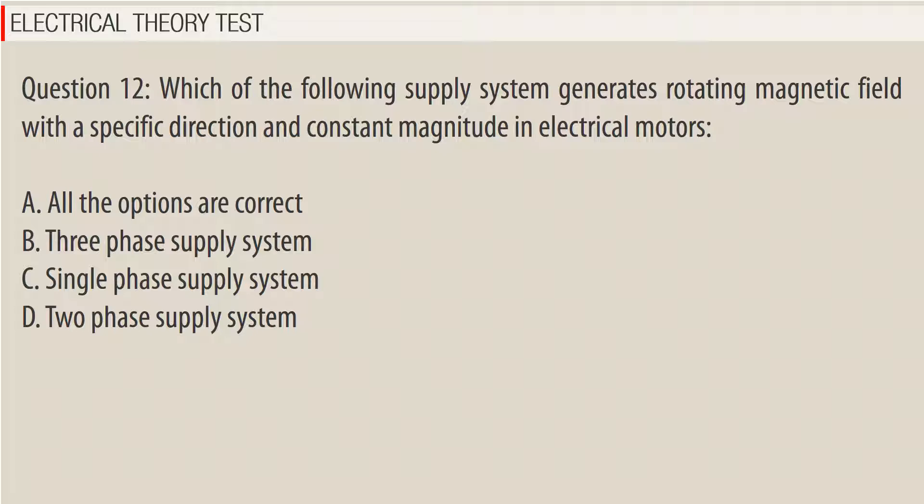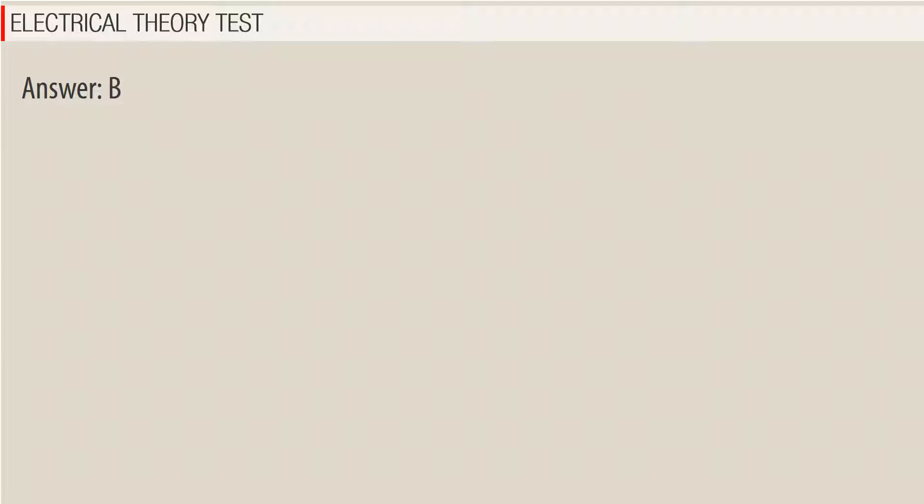Question 12: Which supply system produces a rotating magnetic field with a specific direction and constant magnitude in electrical motors? A. All the options are correct. B. Three-phase supply system. C. Single-phase supply system. D. Two-phase supply system. Answer: B.